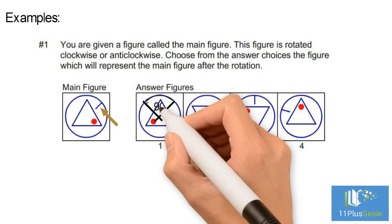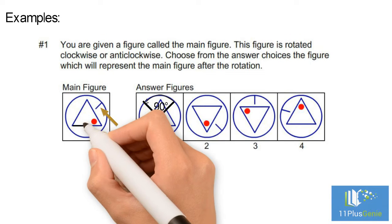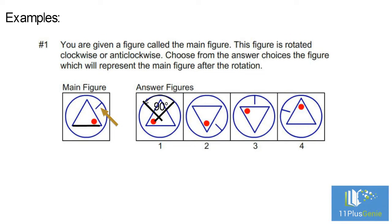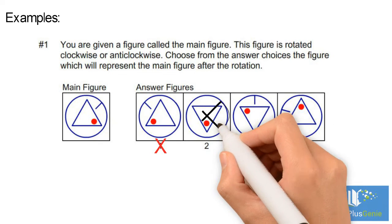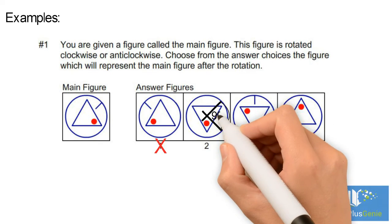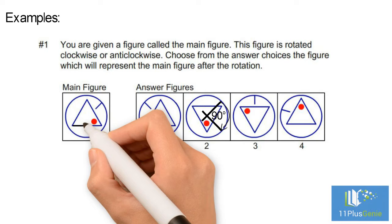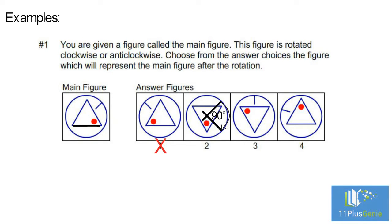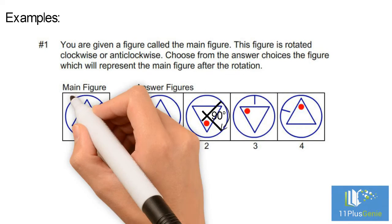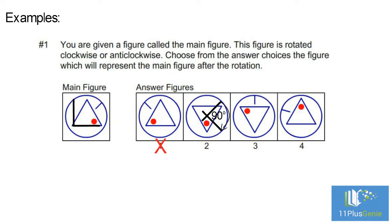The rotation is 90 degrees anti-clockwise. If we look at the bottom line of the triangle, it must also rotate 90 degrees anti-clockwise to look like this — we can eliminate figure one. In figure two, this line has rotated through 90 degrees clockwise. Again, this side of the triangle must rotate 90 degrees clockwise to look like this — eliminate figure two.